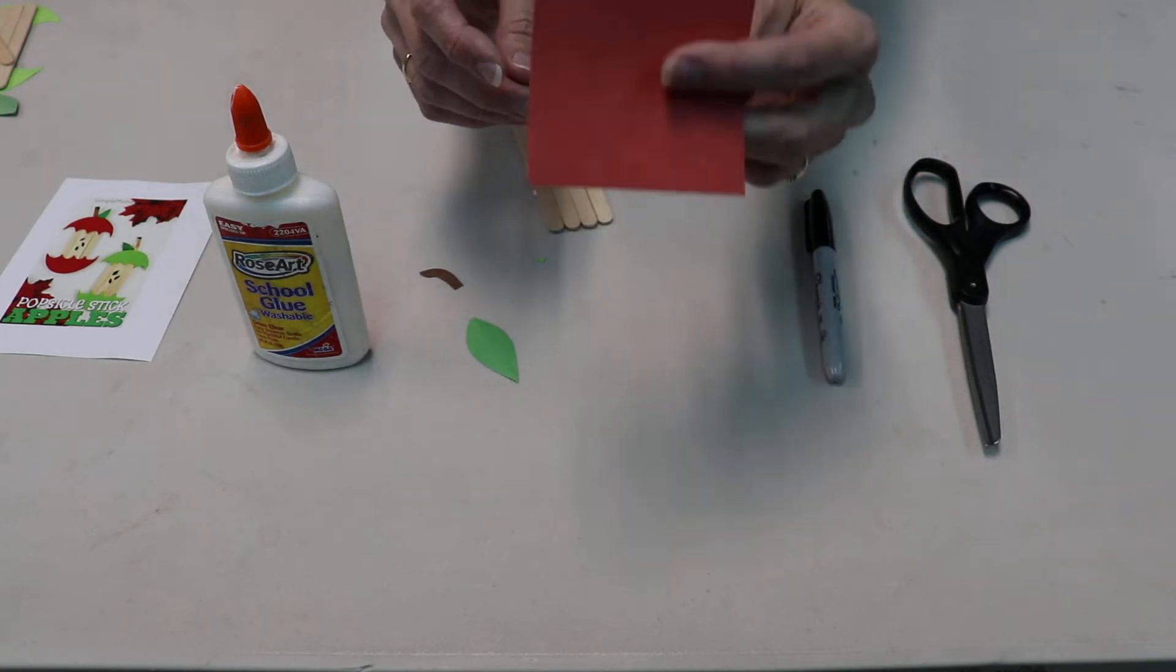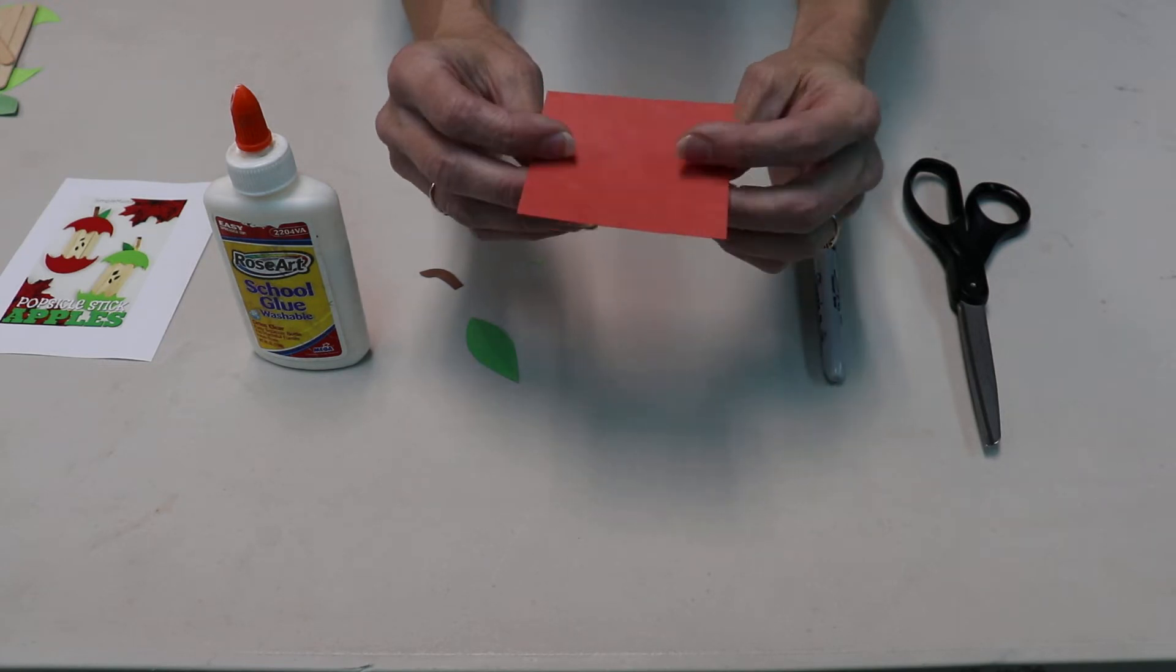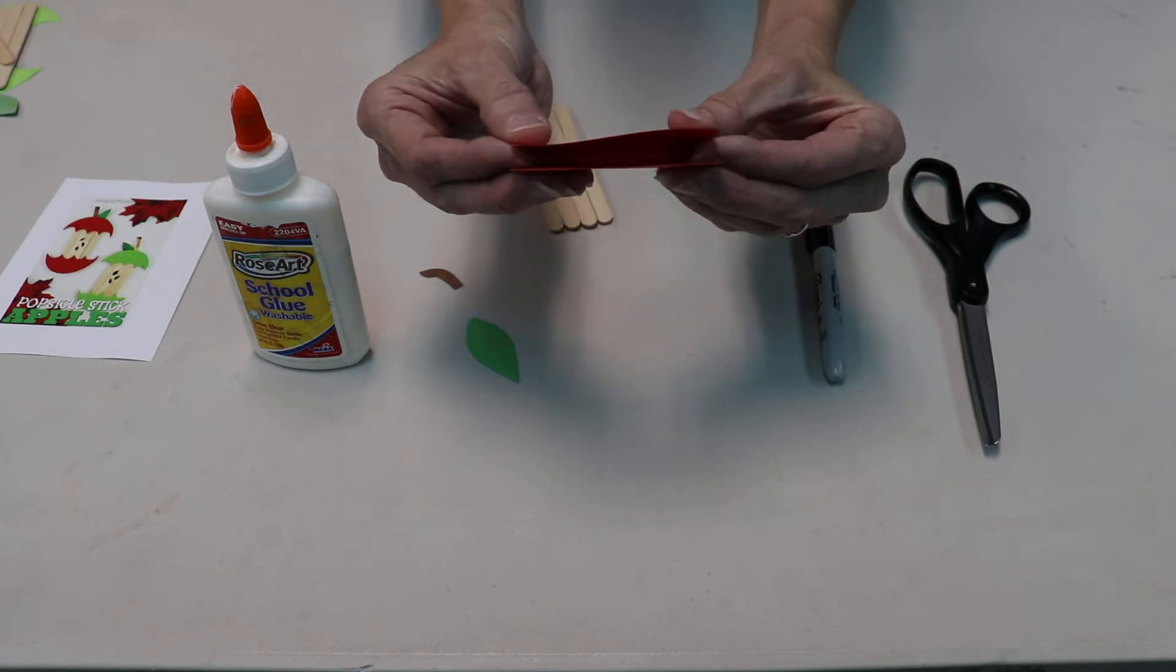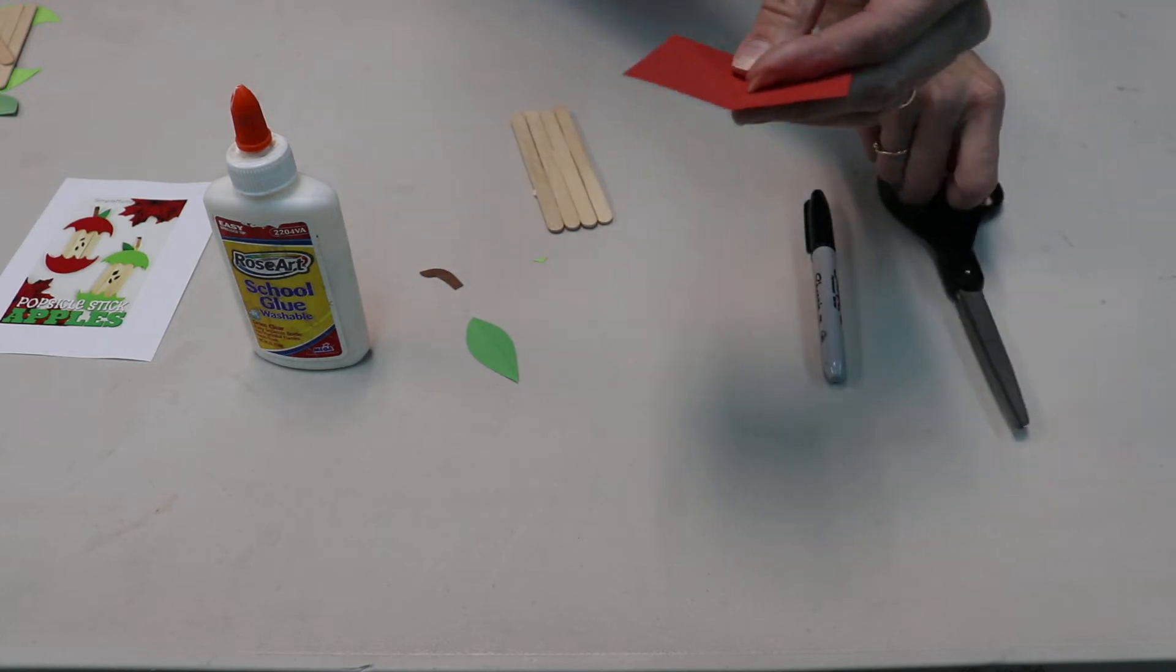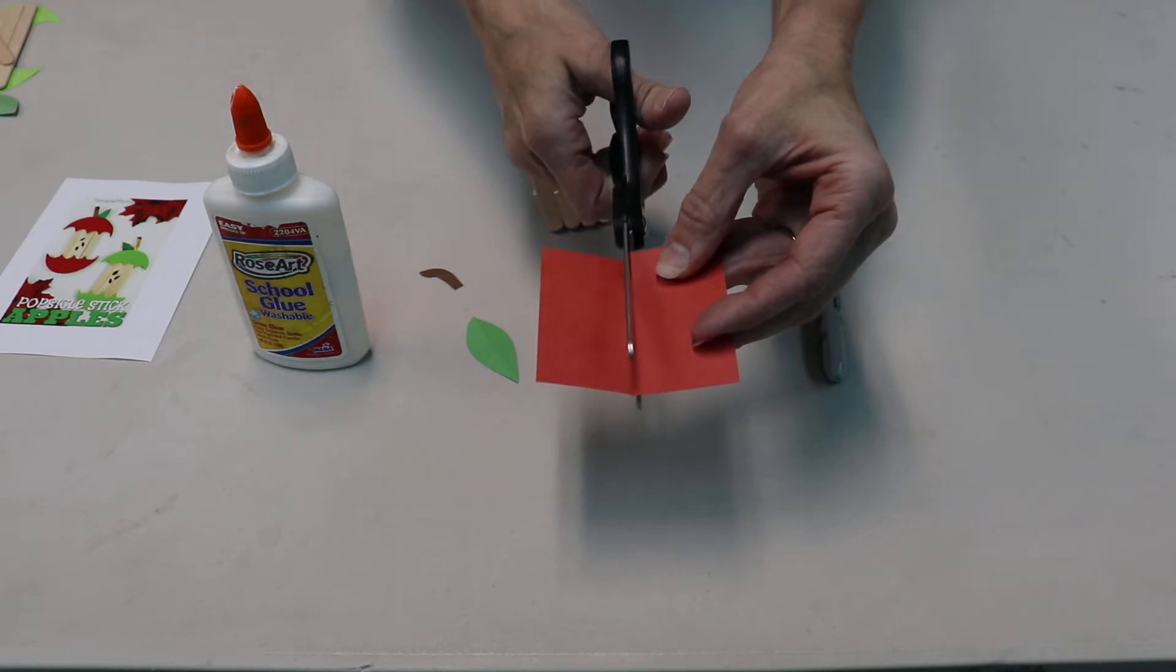After that, you'll have either a red or green because apples can be either red or green. And then we'll take that. First thing to do with this is cut it in half.